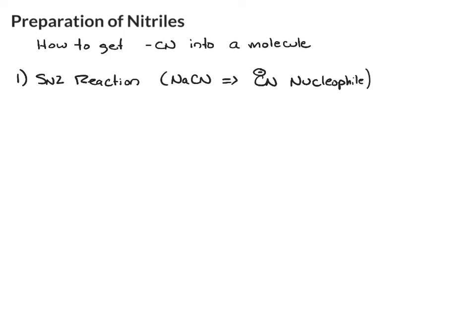Now for SN2, if you're going to use a nucleophile, you need a carbon with a good leaving group — something like Br, Cl, I, or tosylate — a good leaving group.